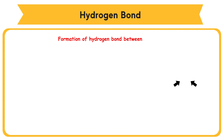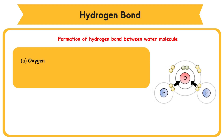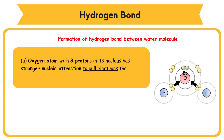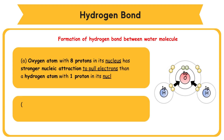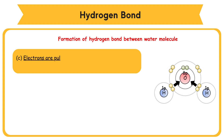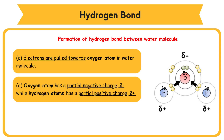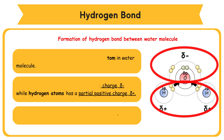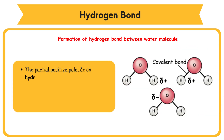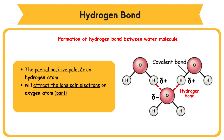Formation of Hydrogen Bond between Water Molecules. A. Oxygen atom, with 8 protons in its nucleus, has stronger nuclear attraction to pull electrons than a hydrogen atom with 1 proton in its nucleus. B. Oxygen atom is more electronegative than a hydrogen atom. C. Electrons are pulled towards the oxygen atom in the water molecule. D. Oxygen atom has a partial negative charge, while hydrogen atoms have a partial positive charge. E. Water molecule becomes a dipole molecule. The partial positive pole on hydrogen atom will attract the lone pair electrons on the oxygen atom, which has a partial negative charge, of a nearby water molecule.